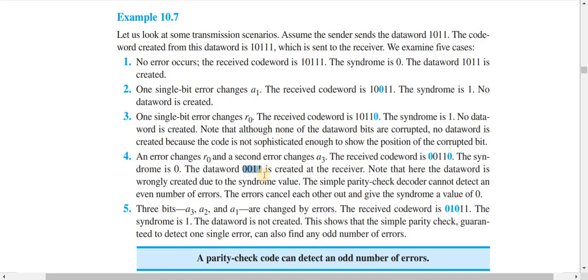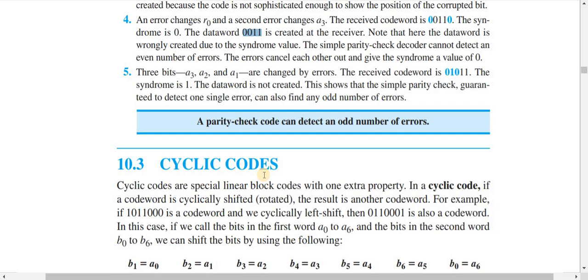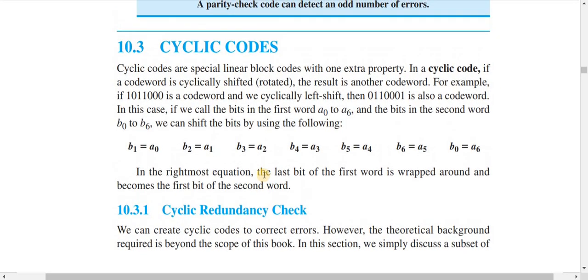I hope this tutorial has helped you understand how parity check code can be used in detecting errors in data communication, and that the explanation of example 10.7 is clear. In the next tutorial, we are going to learn about cyclic codes, and we will discuss one of the cyclic codes named cyclic redundancy check, or CRC. See you in the next tutorial. Thank you.